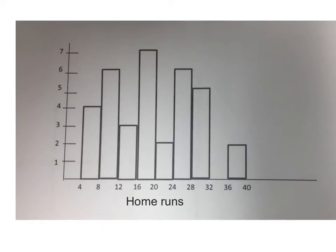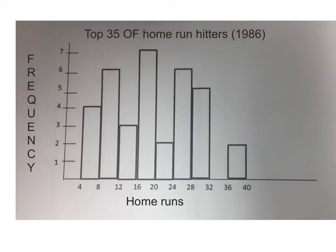And the side is going to be frequency. So I have to make sure that it says frequency also. This way it's very clear to everybody what they're looking at. I also have to have some kind of a title with this, just like we do with all the other graphs. So in this case, I probably would say home run hitters from 1986. Now I have all the information there.